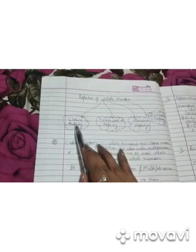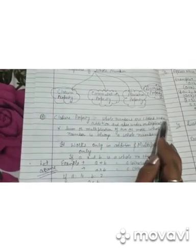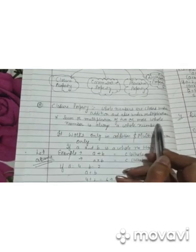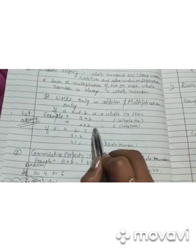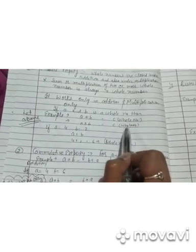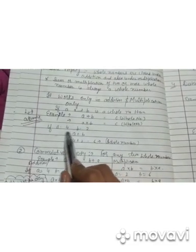Next is properties of whole numbers. There are 4 properties: 1st is closure property, 2nd is commutative property, 3rd is associative, and 4th is distributive. Closure property: whole numbers are closed under addition and multiplication. Sum or product of 2 or more whole numbers is always a whole number. If a = 4 and b = 2, then a + b = 6, which is a whole number. Similarly, a × b = 8, which is also a whole number.